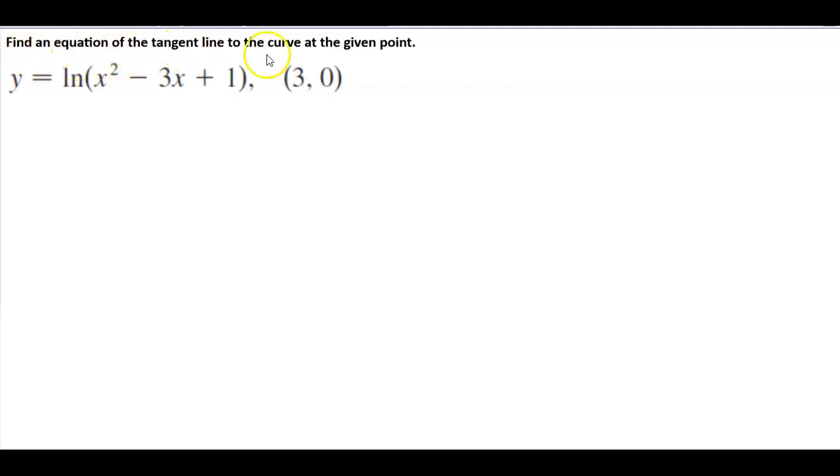Here we want to find an equation of the tangent line to the curve at the given point. We have y which is equal to the natural log of x squared minus 3x plus 1 at the point (3, 0).